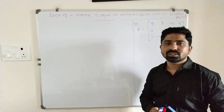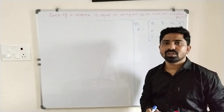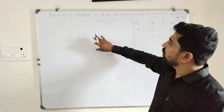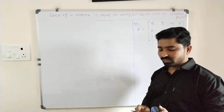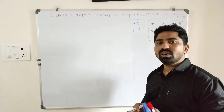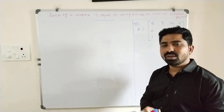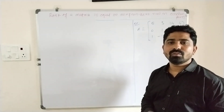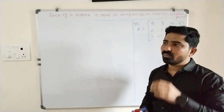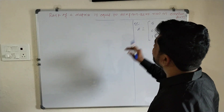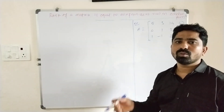In the last video we discussed that a matrix is said to be in Echelon form if it satisfies three properties. Property P1: all zero rows occur below non-zero rows. Property P2: the leading element of each non-zero row is 1. Property P3: the leading element of row R(i+1) occurs to the right of the leading element of row Ri. The rank of a matrix equals the number of non-zero rows in its Echelon form.